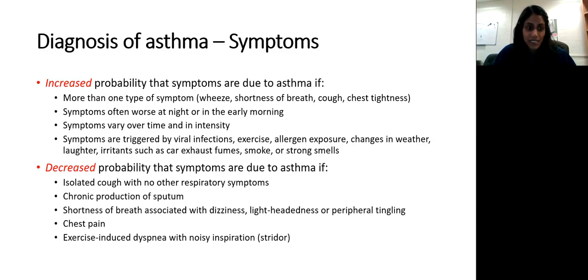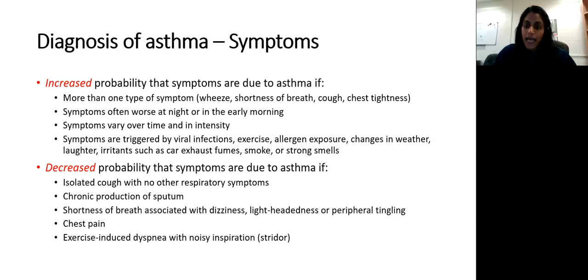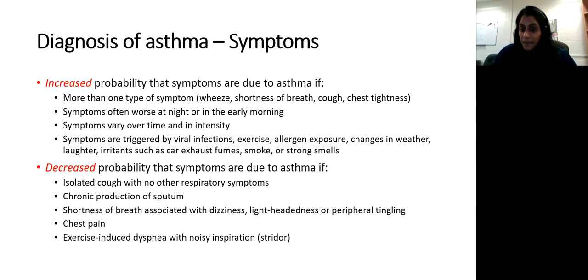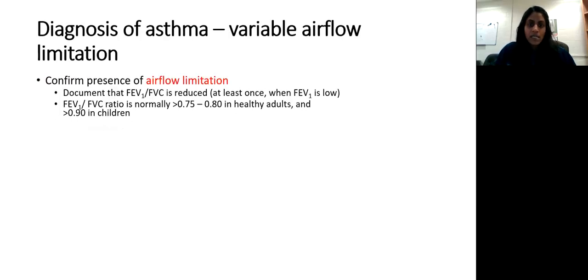Decreased probability that symptoms are due to asthma: only a cough without other symptoms, chronic sputum production (as seen in COPD or bronchiectasis), shortness of breath with lightheadedness and peripheral tingling — those suggest other causes such as pulmonary hypertension or cardiac etiologies. Chest pain is not very typical for primary asthma. Exercise-induced dyspnea with noisy inspiration such as stridor is not very typical either, though asthma can come with vocal cord dysfunction.